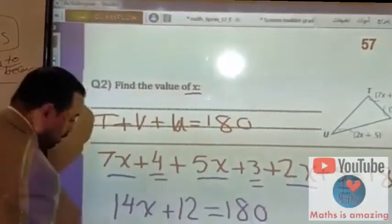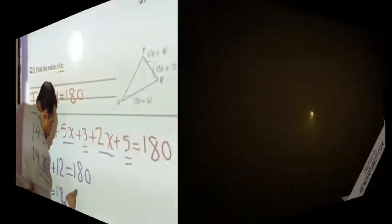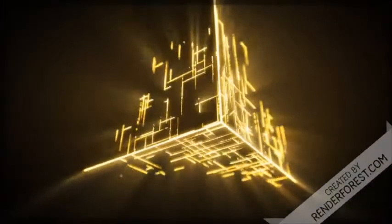This is an equation. Therefore, 14x equals 180 minus 12.